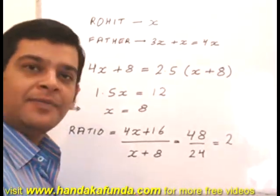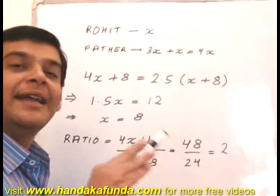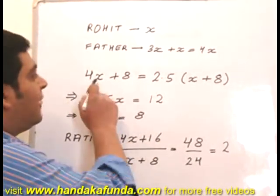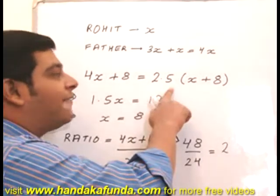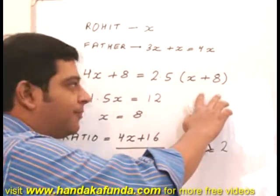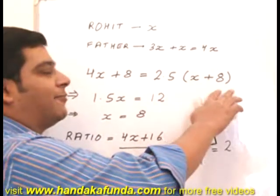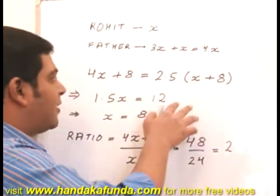8 years hence, that is 8 years later, father's age will be 4X plus 8, and he will be 2.5 times Rohit's age then. So that is 2.5 times X plus 8.